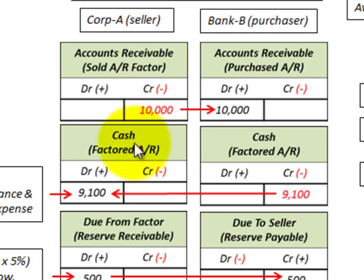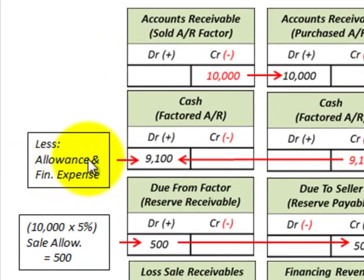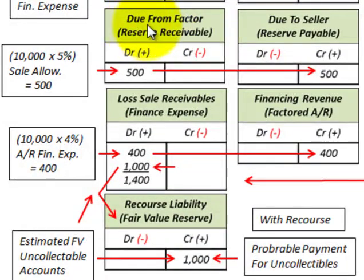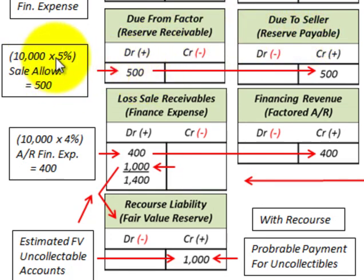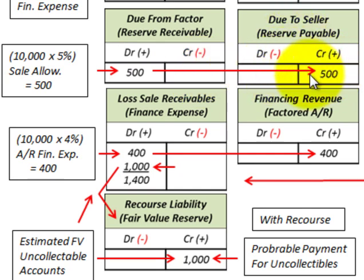The $9,100 is less than $10,000 due to allowances for sales discounts and a financing expense on the sale of these receivables. We set up a 'due from factor' account — a receivable for Corporation A — and a 'due to seller' account — a payable for Bank B. We take 5% of the $10,000 as a sales allowance and discount, so we debit 'due from factor' for $500 and Bank B credits 'due to seller' for $500. Not all allowances will be used; any unused balance goes back from Bank B to Corporation A. We also set up a loss on sales of receivables account. The financing expense is 4% of $10,000, so we debit loss on receivables for $400, and Bank B credits financing revenue for $400.